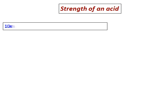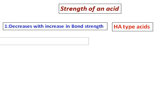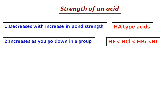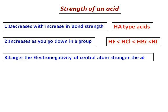Now let's see the factors which govern the strength of an acid. First, strength of the acid decreases with increase in bond strength — this is mainly for HA-type acids like HF, HCl, and HI. Second, acid strength increases as you go down in a group: HF is less strong than HCl, less strong than HBr, less strong than HI. Third, the larger the electronegativity of the central atom, the stronger the acid.